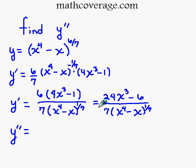Now for the second derivative, I'm going to use the quotient rule. Take the derivative of the top, which is 3 times 24, which is 72x^2.